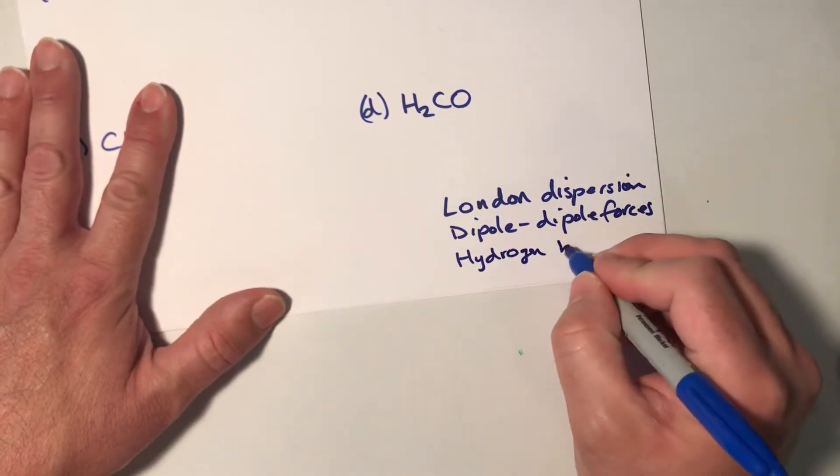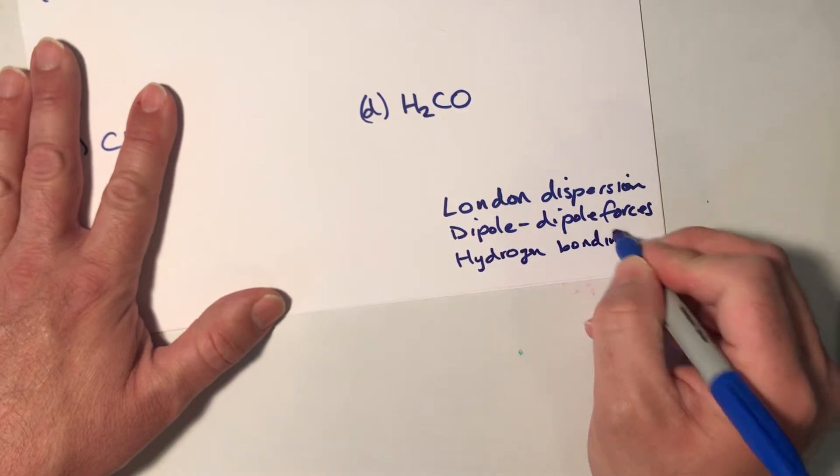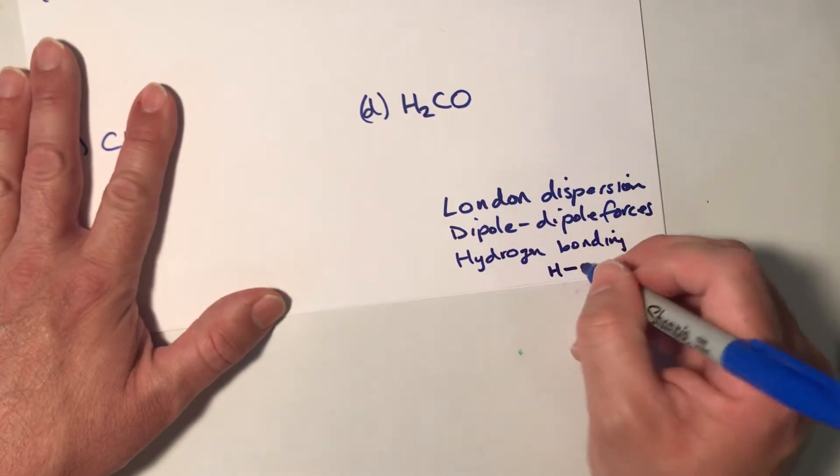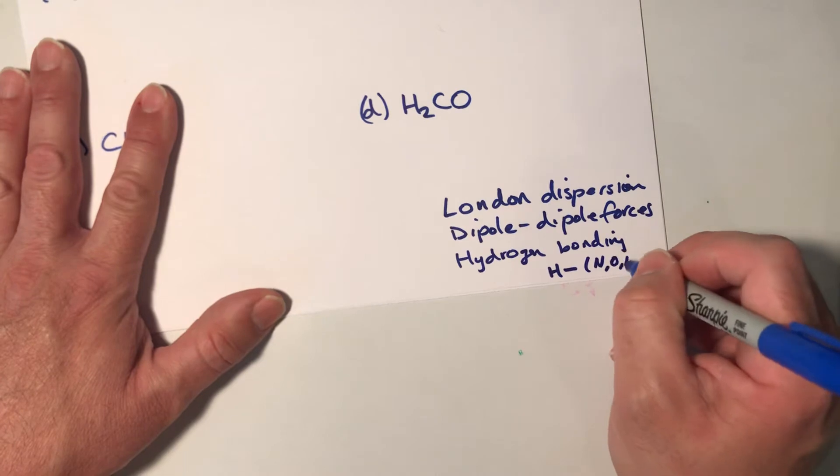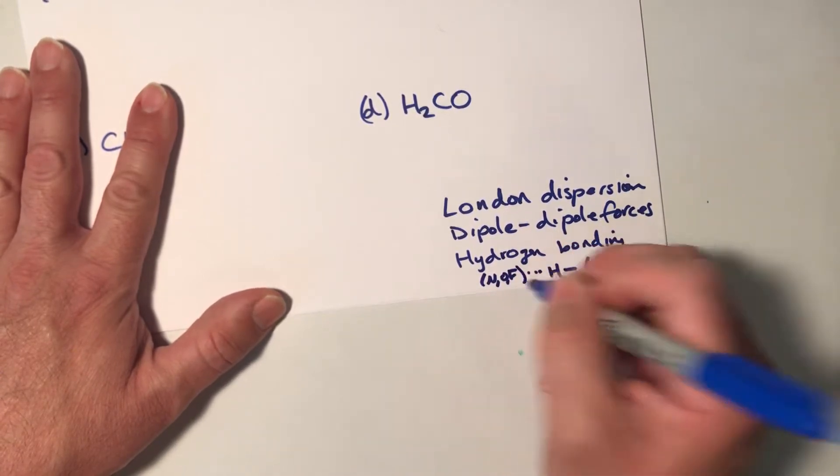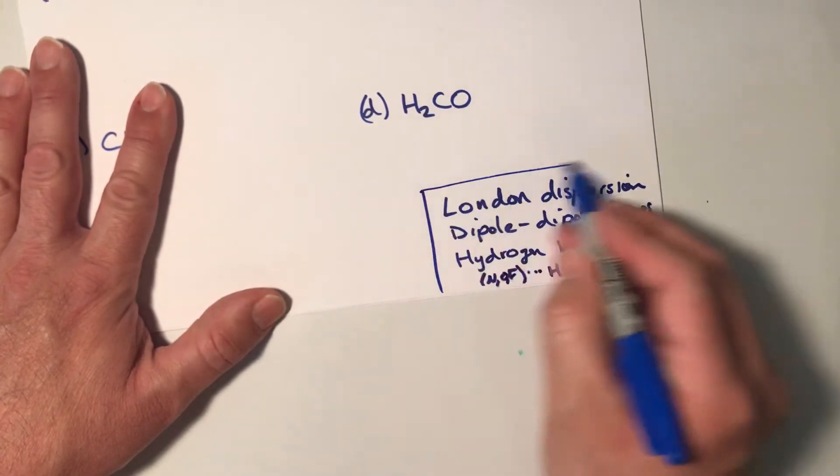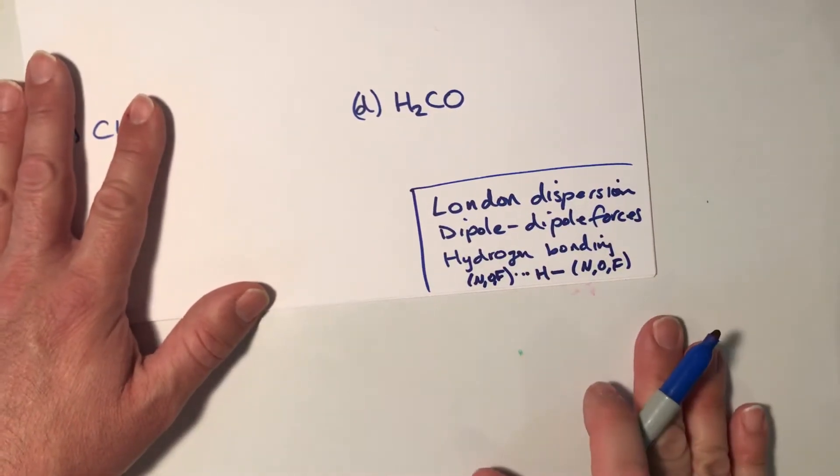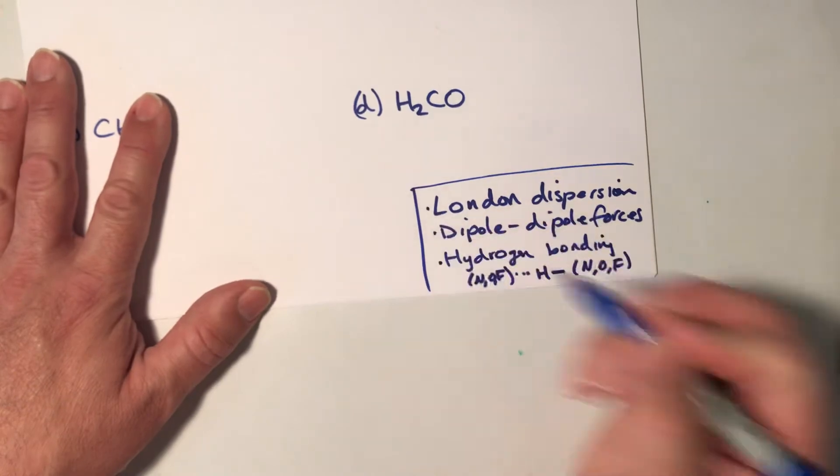And remember, for hydrogen bonding, we're looking for a bridge where hydrogen is covalently bonded to a nitrogen, oxygen, or fluorine, and it's attracted on a neighboring molecule to a nitrogen, oxygen, or fluorine. All right, so those are the three that we're looking for in each of our substances: London dispersion, dipole-dipole, hydrogen bonding.